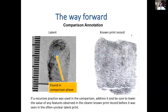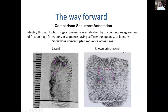Because the known print is a little clearer, I was able to see a feature I didn't mark in my analysis, so I marked it in orange. Because that was found as a result of a recursive process — from the clear known print record to the latent — I'm going to value it less. Now I show my sequence — the comparison sequence. The identity of friction ridge impressions is established by the continuous agreement of friction ridge formations in sequence, having sufficient uniqueness to identify. You have to show your uninterrupted sequence of features. I started here, followed a path, and was able to do the exact same thing in the latent as in the known print — there's the sequence, those are the features, that's how I established that these two prints were in agreement.